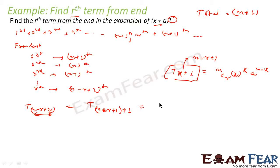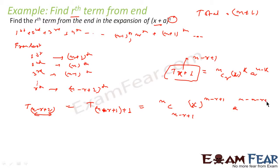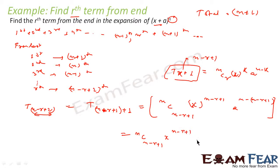Replacing k with n−r+1, the rth term from the end becomes: nC(n−r+1) · x^(n−r+1) · a^(n−(n−r+1)) = nC(n−r+1) · x^(n−r+1) · a^(r−1).